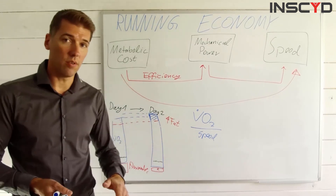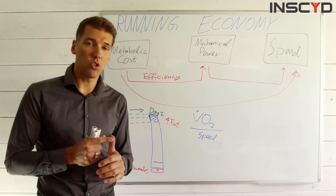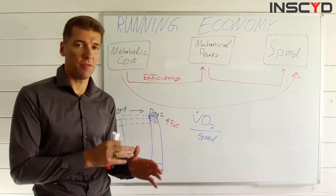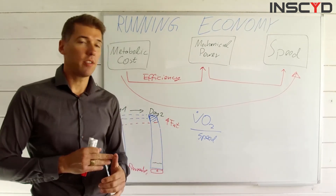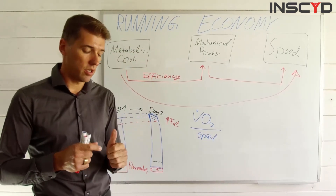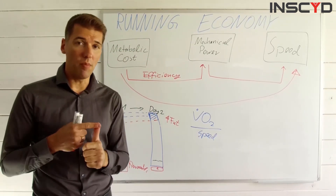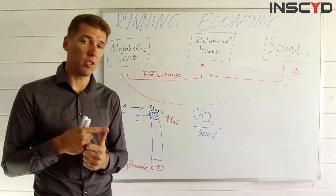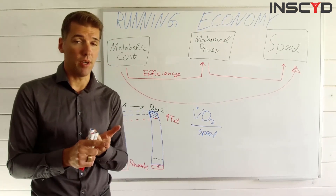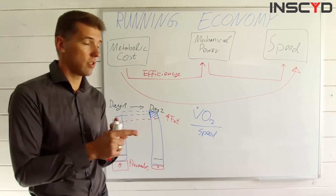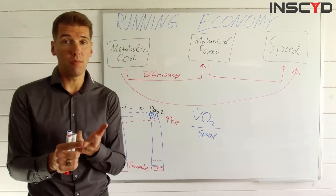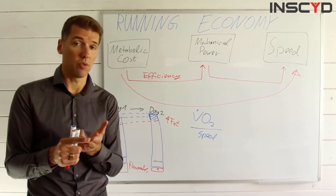Long story short — the takeaway is: when you get running economy measured, make sure people normalize it for base metabolic rate, normalize it for fatty acid combustion, only look at the VO2 that goes into muscle contraction, and normalize it for anaerobic energy contribution.